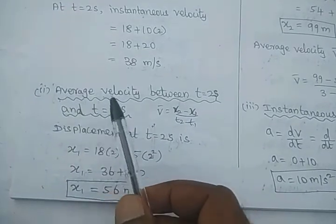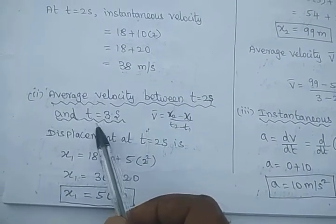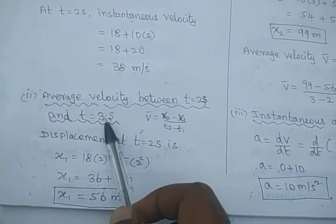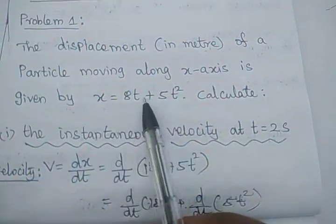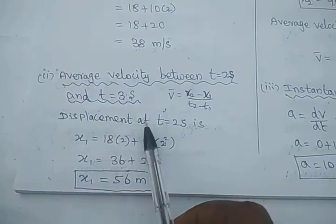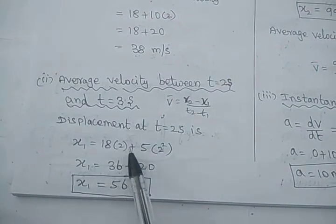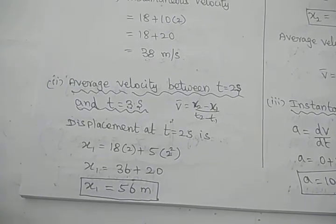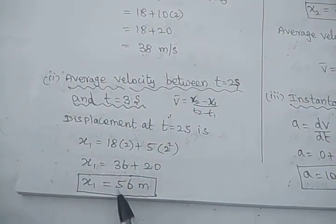Now we find the average velocity between t equals 2 seconds and t equals 3 seconds. Average velocity requires finding the position at each time. The displacement equation is x equals 18t plus 5t squared. At t equals 2 seconds, x1 equals 18 times 2 plus 5 times 2 squared, giving x1 equals 56 meters.